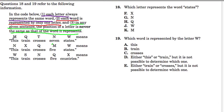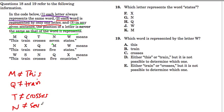So this means that the letter M can't represent this. So those two are not a match. Q cannot represent train. So we know that. And we can keep going. T cannot represent crosses. N cannot represent seven. And I'll use this over here, this area. W cannot represent states.